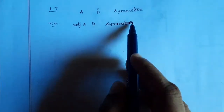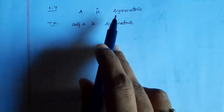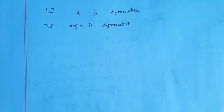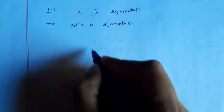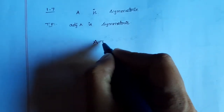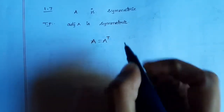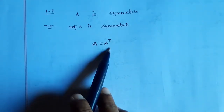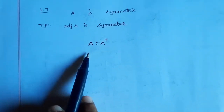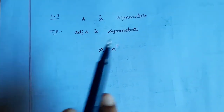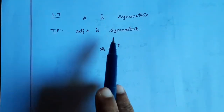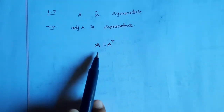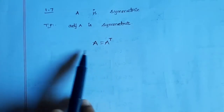Symmetric — first, let's recall the definition. When is a matrix called a symmetric matrix? A matrix is called symmetric when A is equal to A transpose. So, given A is symmetric means A is equal to A transpose.